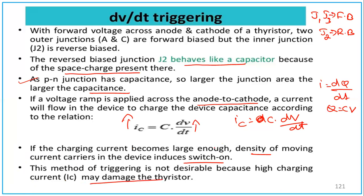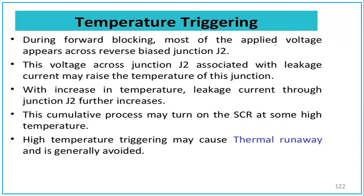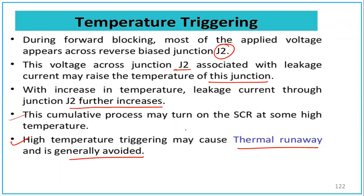The dV/dt triggering method is not desirable because a high charging current IC may damage the thyristor, which is why external gate triggering is preferred. For temperature triggering: during forward blocking, most of the applied voltage appears across reverse-biased junction J2. The voltage across J2 associated with leakage current may raise the junction temperature. With increased temperature, leakage current through J2 further increases. This cumulative process may turn on the SCR at high temperature, causing thermal runaway, and is generally avoided.